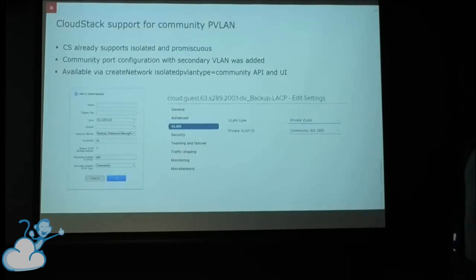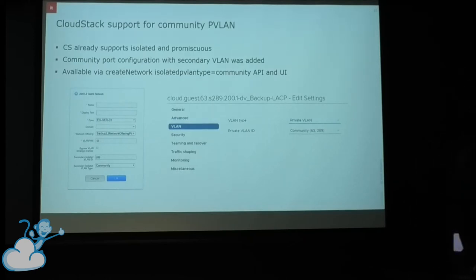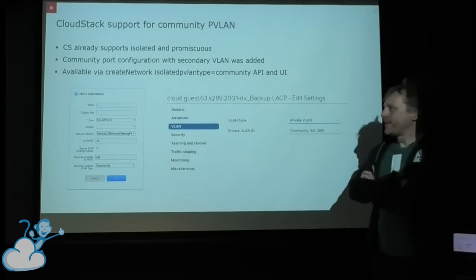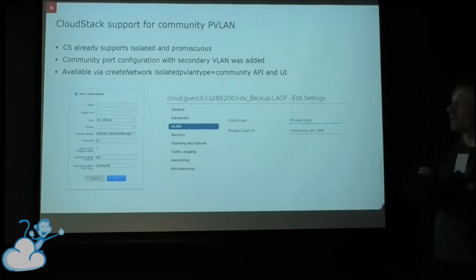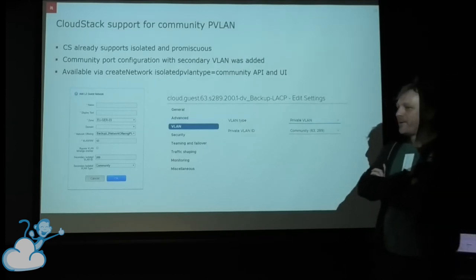For that, we reached out to ShapeBlue to have it extended, and we got a new feature called PVLAN community, which is accessible via the API — specifically the create network API call — based on the isolated PVLAN type using the community type parameter. This is also available in the CloudStack UI.